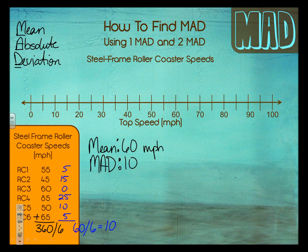If you checked out how to find MAD Part 1, we covered how we calculate a mean of 16 and a MAD of 10. If you're curious where those came from, check out Part 1. We're talking about mean absolute deviation, which is the average distance of a data set from its average. What we're going to do now is put these points onto a number line and discuss what this means and how we calculate it.